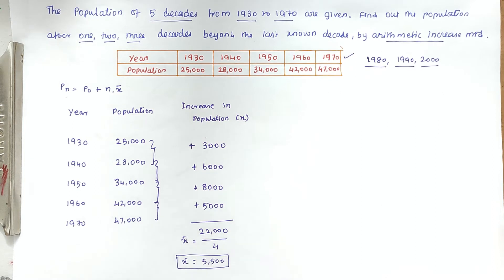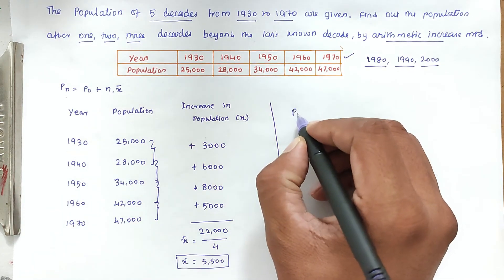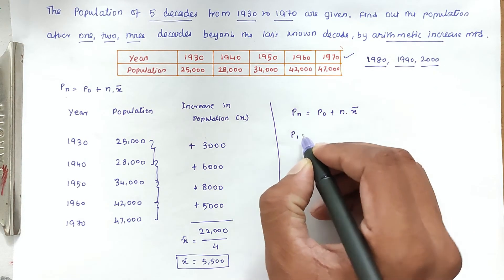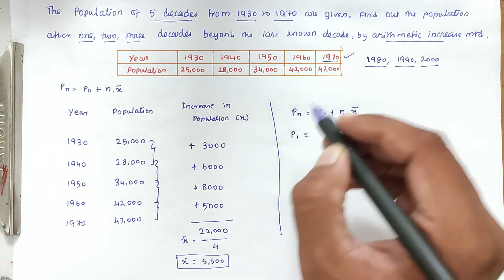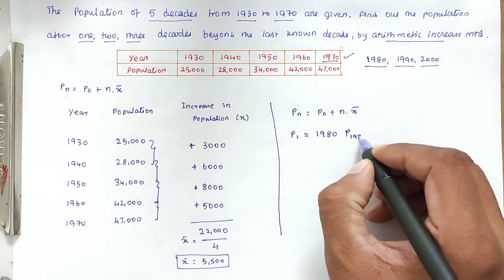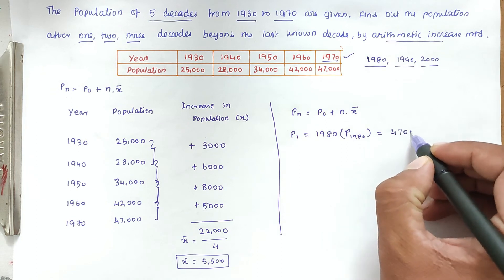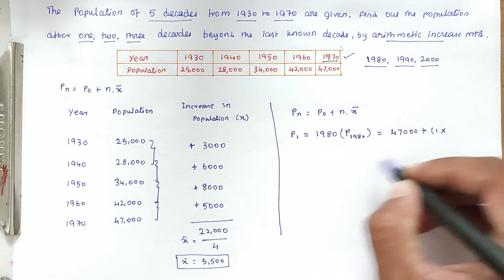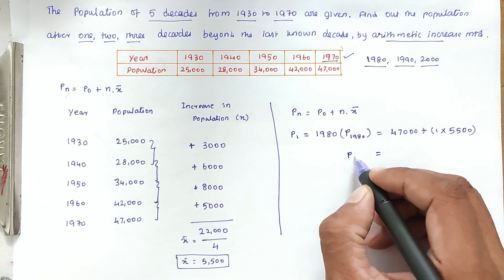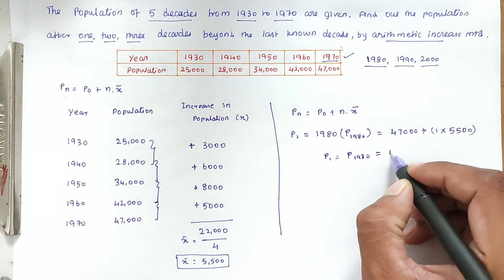The average increase in population per decade is 5,500. Now substituting into the formula Pn = P₀ + n × x̄: for 1980 (n = 1), P₁₉₈₀ = 47,000 + 1 × 5,500 = 52,500. So the population forecast for 1980 is 52,500.